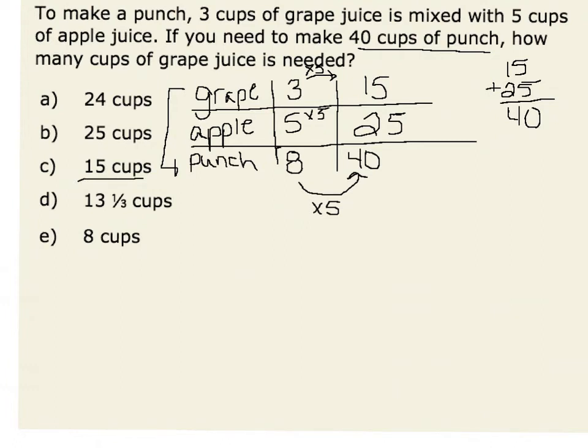Another way that I could solve this problem is to set up a proportion. In this proportion, I want the part grape juice to the total parts of punch. Therefore, my part-whole ratio would be three cups grape to eight cups punch. Again, writing the part grape to part apple as a part-whole, part grape to whole punch.